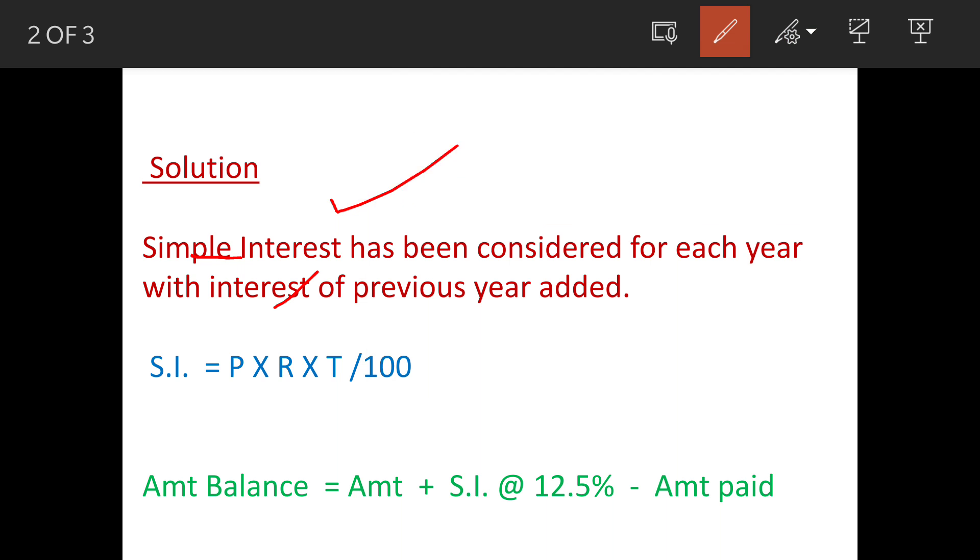The formula will be P into R into T upon 100 for simple interest. Amount balance will be worked out by using this statement: amount plus interest minus amount paid. So this will give us balance amount at the end of each year.